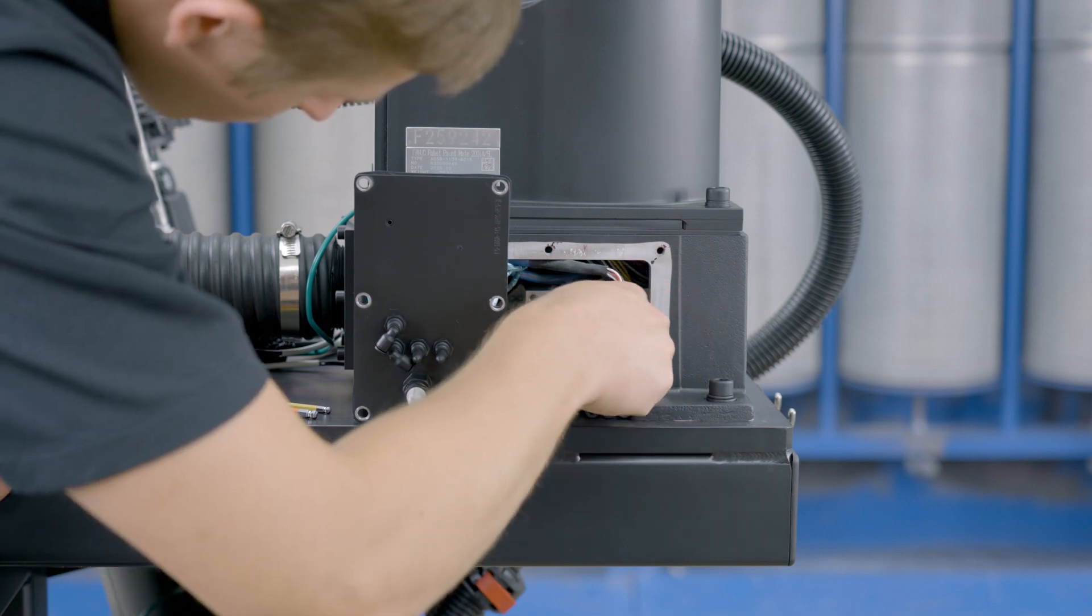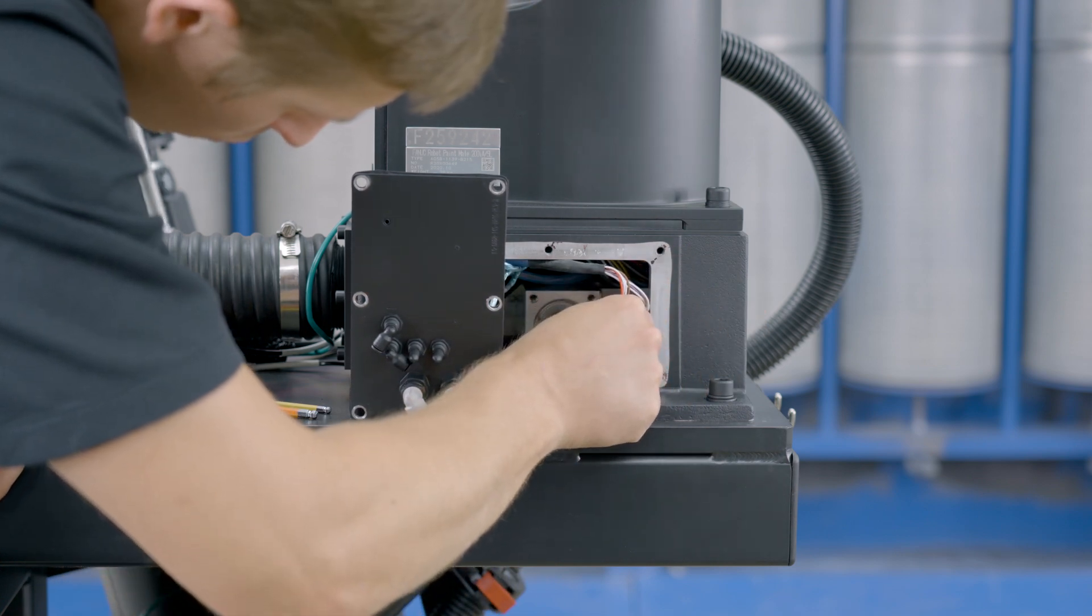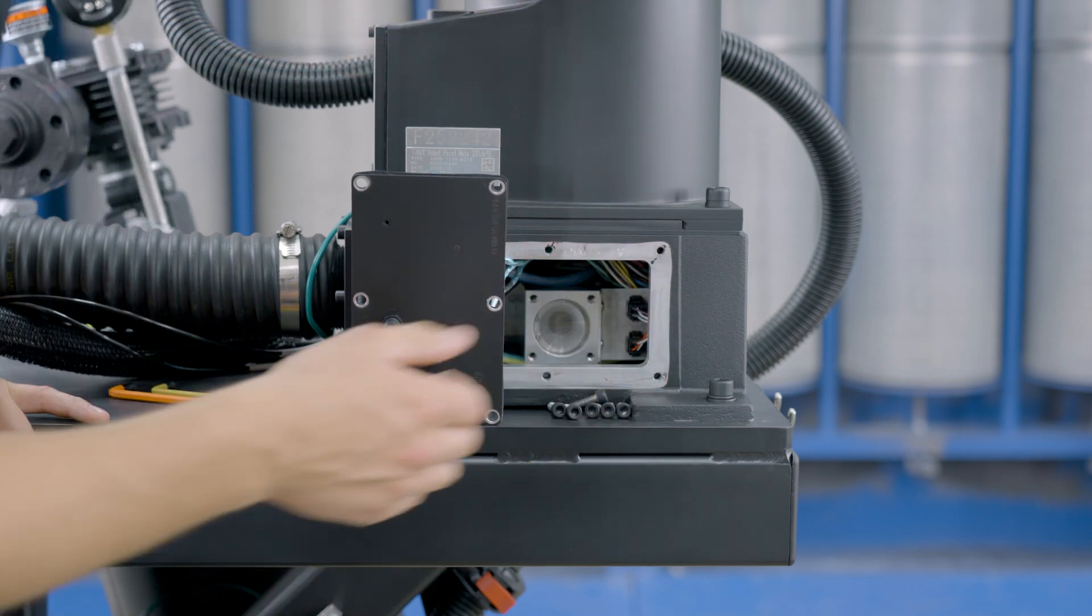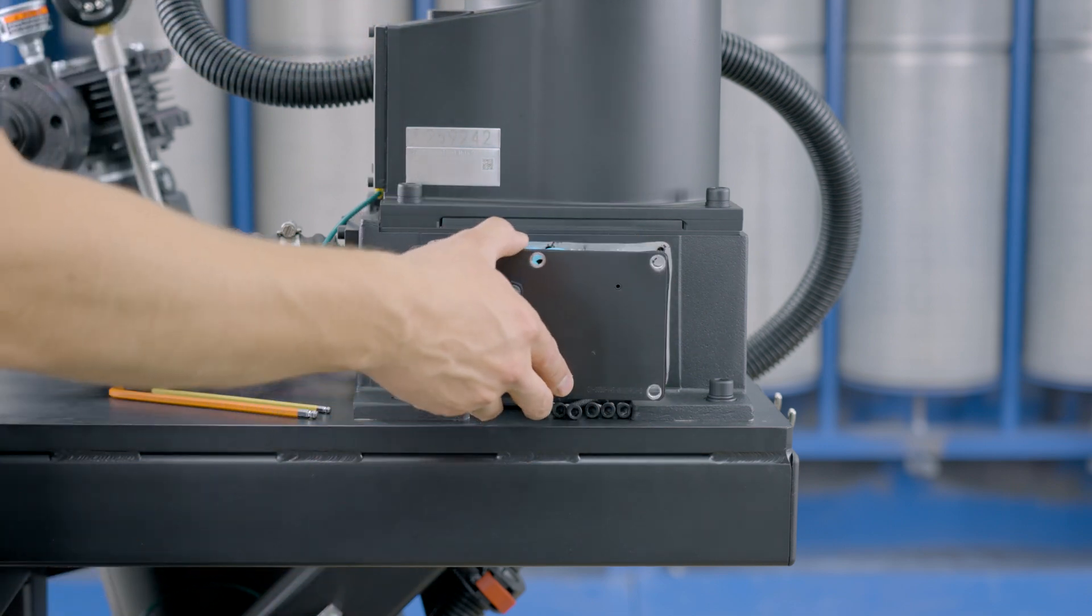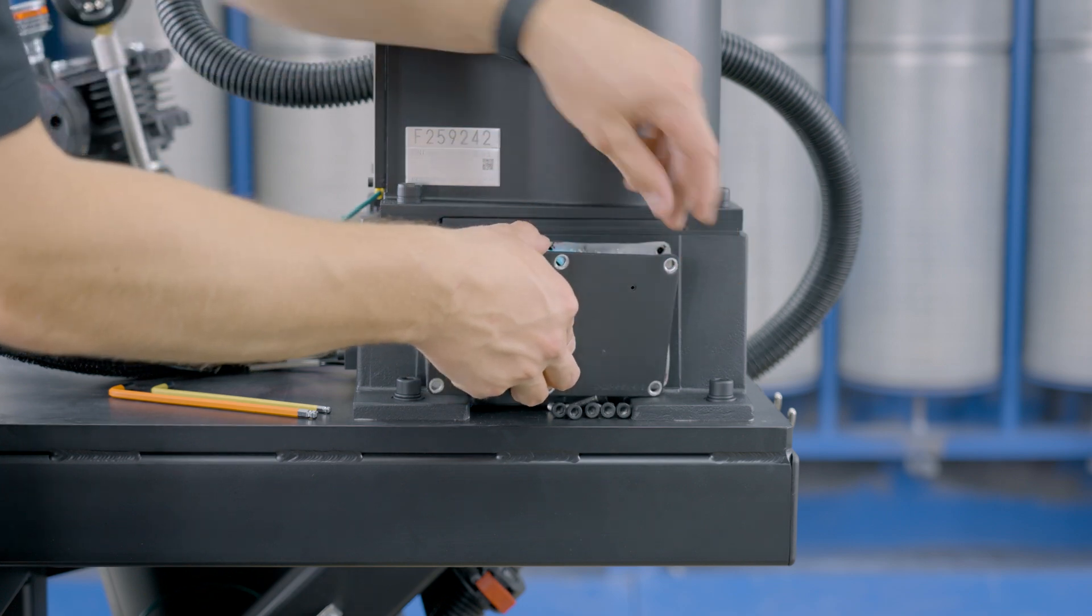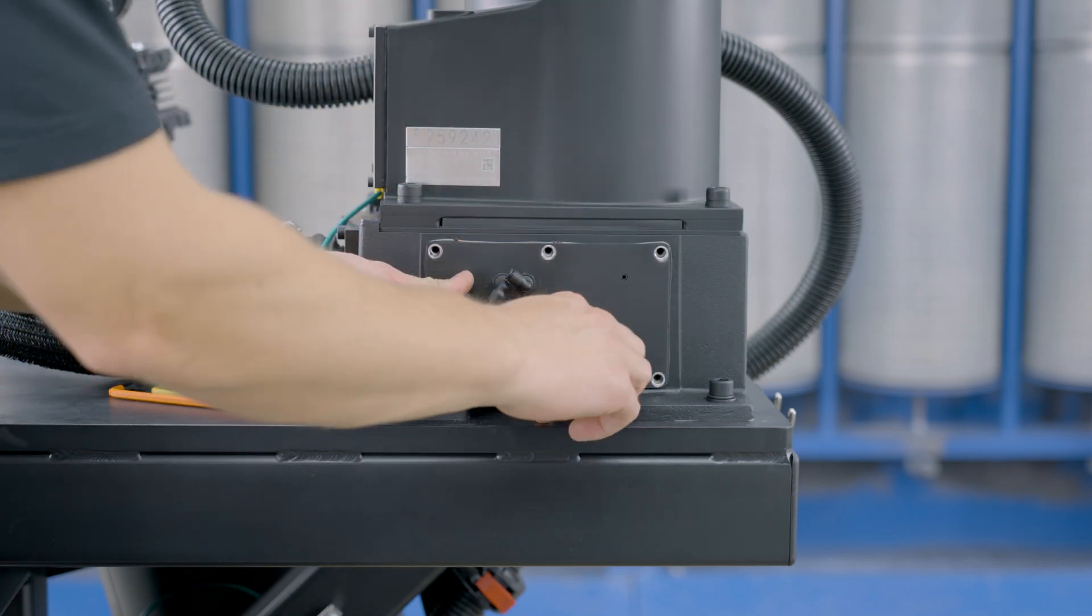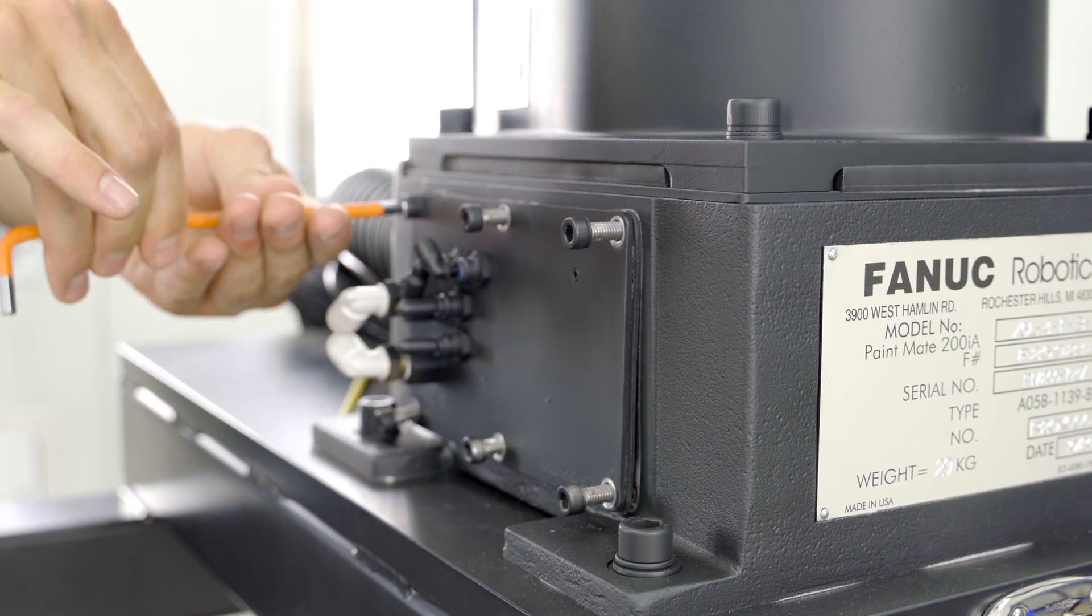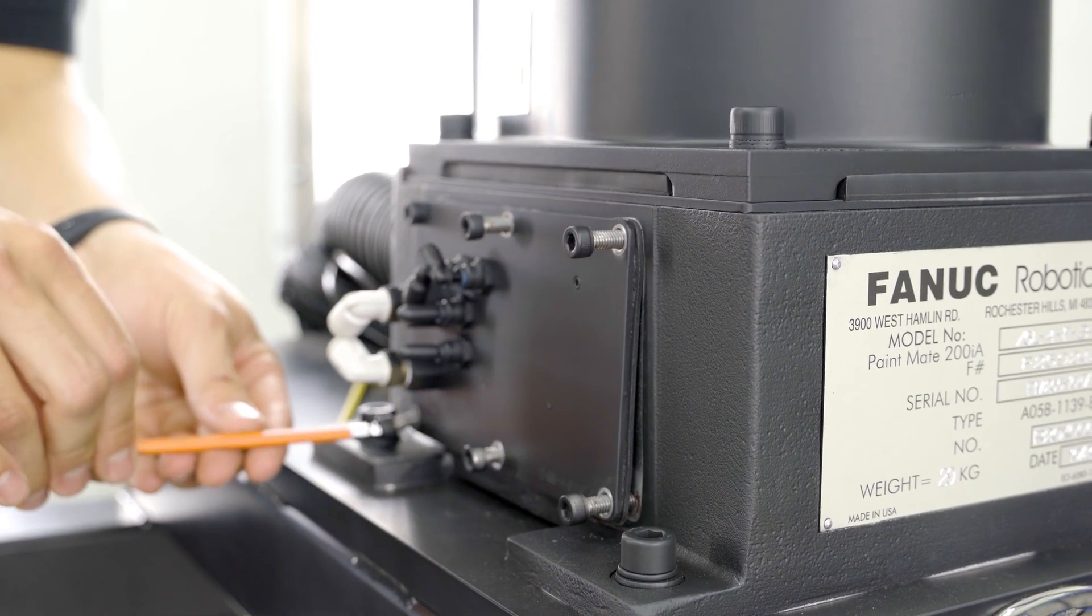Gently tuck the wiring harness up into the housing and reinstall the base plate. Gently thread all six bolts back into the base and hand tighten with a 5 millimeter allen wrench.